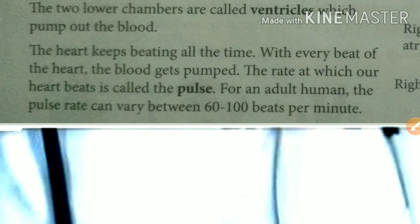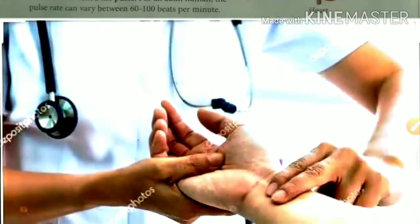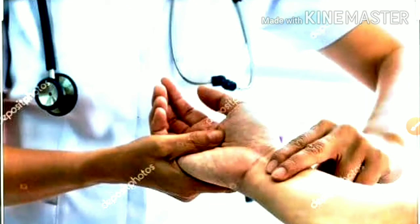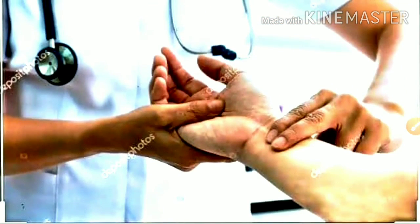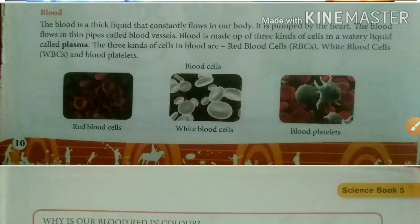For an adult human, the pulse rate can vary between 60 to 100 beats per minute, and normally it is 72. You have seen doctors checking your pulse rate. The first part of the circulatory system — the heart — is now complete. We will study the circulation of blood later in the same chapter.